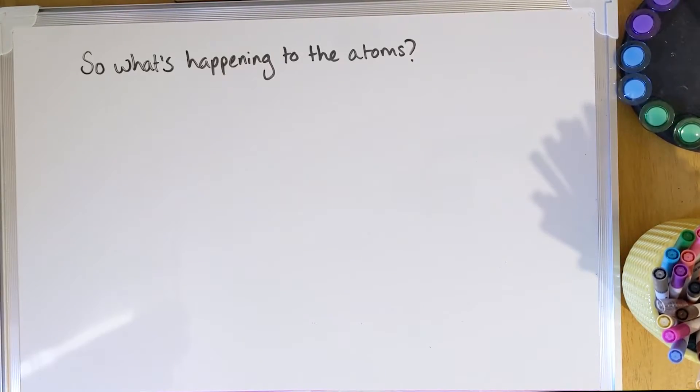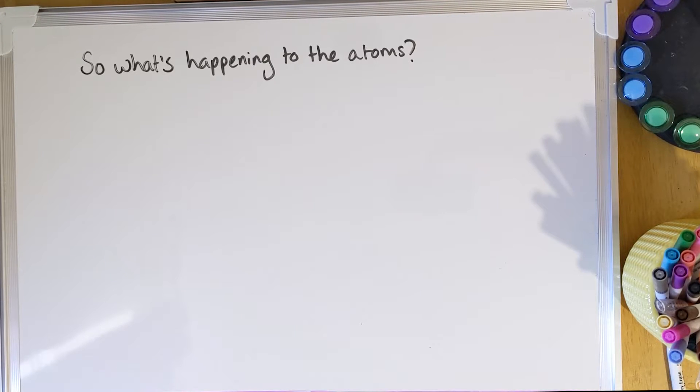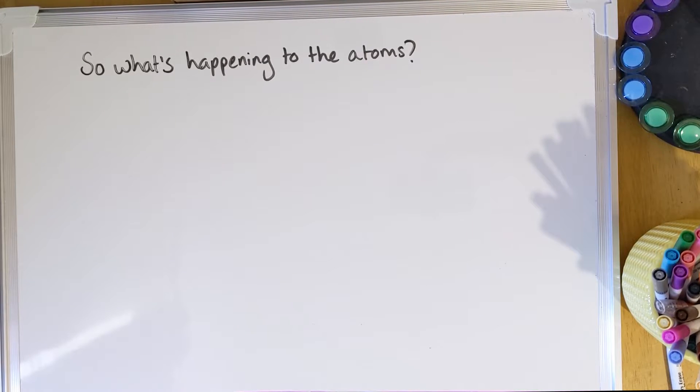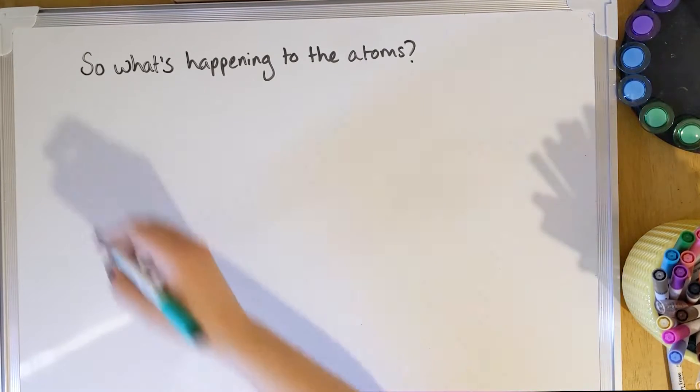Something you need to be able to describe is what's happening to the atoms that make up the reactants and what make up the products, and why it's an endothermic reaction. So we're going to look a little bit more in detail now. The classic example of a thermal decomposition reaction that you usually look at, will be in revision guides and on BBC Bite Size, is copper carbonate.